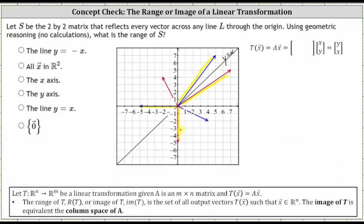And finally, if the input vector is the vector (4, -2) shown in blue, the corresponding output vector is the vector (-2, 4), graphed here in red.